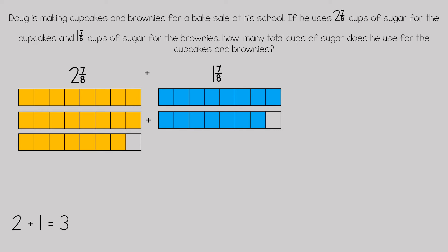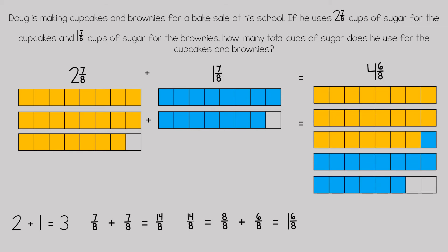Two plus one is three. If we add seven-eighths plus seven-eighths together, that gets us fourteen-eighths, which is a fraction greater than one whole, so we want to make that into a mixed number. Eight-eighths plus six-eighths equals one and six-eighths.